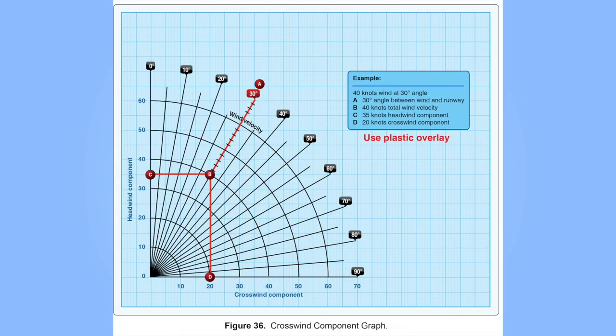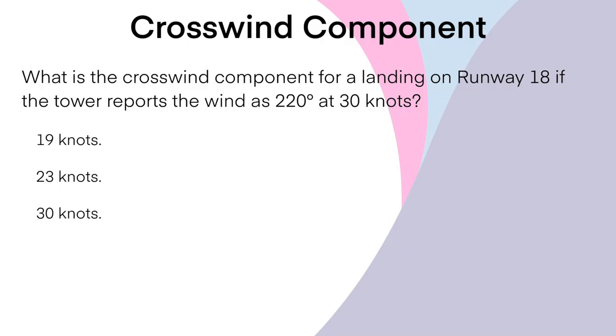The next thing I want to use the CX-3 for is headwind and crosswind component calculations. Some are simple, some more complex. Basically you have a wind direction, wind speed, and runway orientation, and the CX-3 tells you the crosswind and headwind components quickly and accurately. Here's the question: what is the crosswind component for landing on runway 18 if the tower reports wind as 220 at 30 knots?